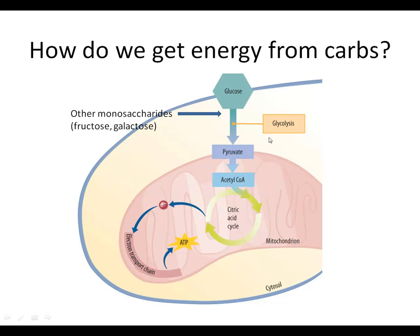Glycolysis is an anaerobic process — it doesn't require oxygen. The decision about whether to take the next step from pyruvate depends on the oxygen supply in the cell. We're not going to talk about the alternative, which is lactogenesis, in this course. Instead, we're just going to focus on the aerobic pathways. Once pyruvate is made, that is the end of glycolysis. The next group of steps — from pyruvate to acetyl-CoA, through the citric acid cycle, through the electron transport chain — is all called aerobic respiration.